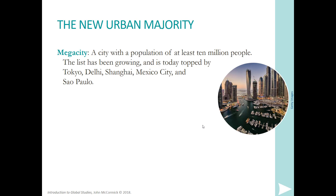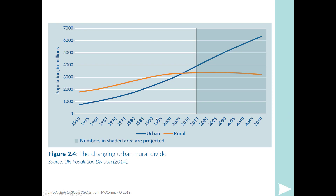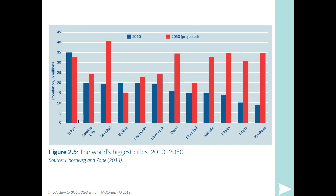On the urban majority: there are at least 10 million people each in Tokyo, Delhi, Shanghai, Mexico City, and São Paulo — not New York City or London, which were the major cities in the past. There was a crossover around 2005–2010 when urban population surpassed rural, and urban areas are growing rapidly. By 2050, the urban population will be around 6,500 million. The world's biggest growing cities are projected to be in Mumbai and elsewhere in Africa and Asia; New York is not among the fastest growing.